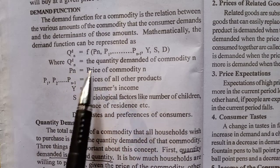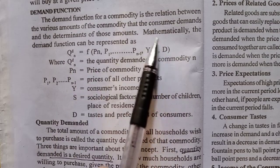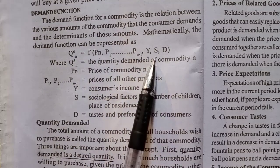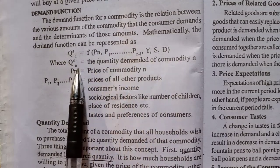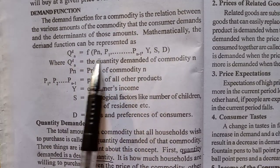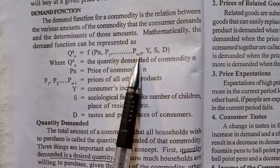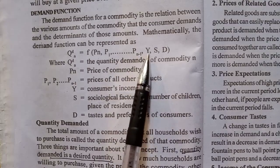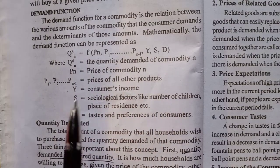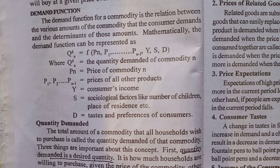The demand function is mathematically denoted as: QDN is equal to function of PN, P1 up to PN minus 1, Y, S, T.